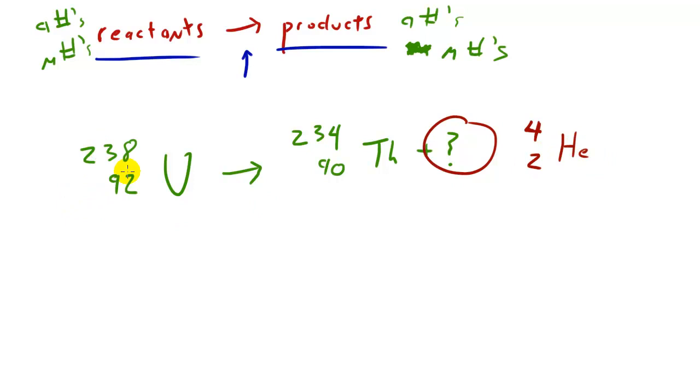So in the case of 238, 92 uranium, it can break apart into 234, 90 thorium and 4, 2 helium, which means the mass number is 4, which means protons plus neutrons, and 2 is the atomic number, which means the number of protons. So let me go ahead and show you guys one more example.